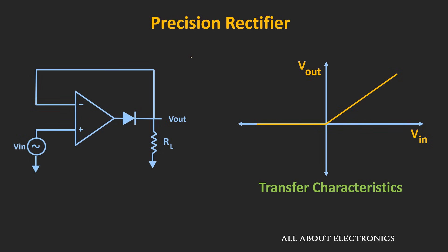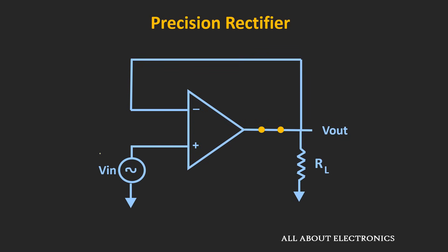If you see the transfer characteristic of this precision rectifier, it will look like this. Whenever the applied input signal is positive — that means Vin is greater than zero — the diode will behave like a closed switch. So the circuit is nothing but a buffer circuit. Whatever input is applied to the positive terminal of the op-amp, the same input will appear at the output terminal. That means whenever the input is greater than zero, the output will follow the input signal.